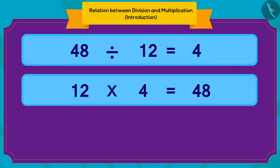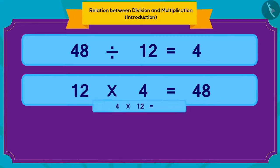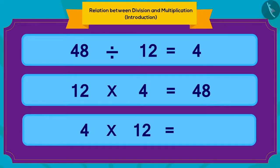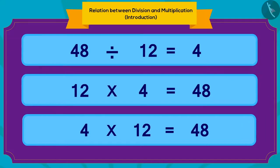We can write this multiplication in one more way. If every person gets 4 kg of kheer and there are 12 people who get kheer, then the total quantity of kheer is 4 multiplied by 12, which is 48 kg. We can write any division in two ways in terms of multiplication.